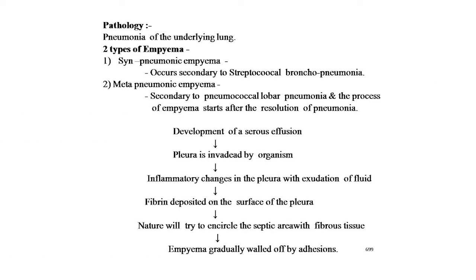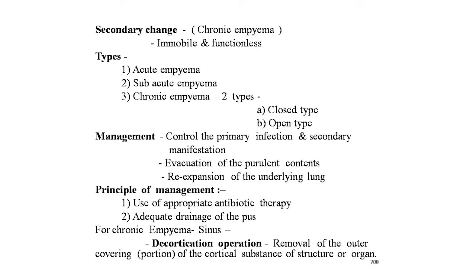Pathology: two types of empyema — synpneumonic empyema, which occurs secondary to streptococcal bronchopneumonia, and metapneumonic empyema, secondary to pneumococcal lobar pneumonia. The process starts after resolution of pneumonia: a serious effusion develops; the pleura is invaded by organisms; inflammatory changes occur with exudation of fluid; fibrin deposits on the pleural surface; and nature tries to encircle the septic area with fibrous tissue, gradually walling off the empyema by adhesions.